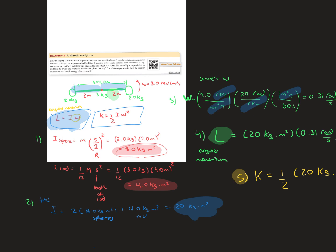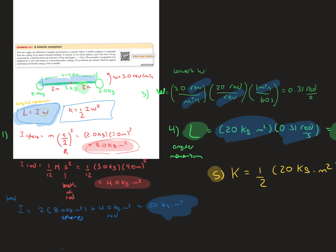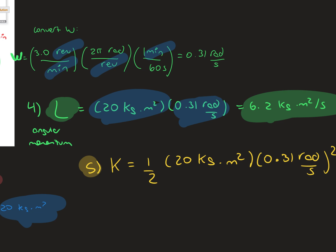Now we can use the formula we set up initially. The moment of inertia times the angular velocity: total moment of inertia times the angular velocity gives us 6.2 kilograms meter squared per second. That's our angular momentum.